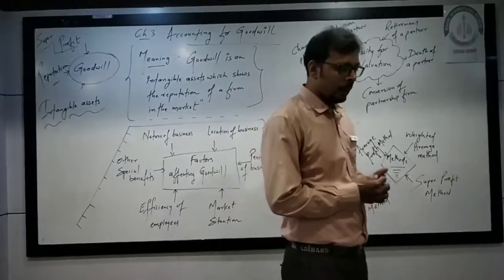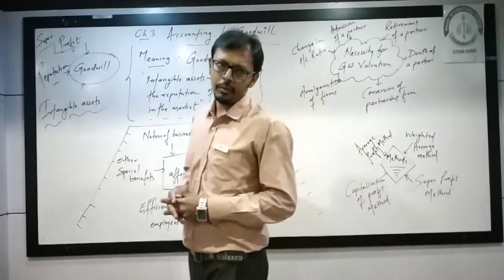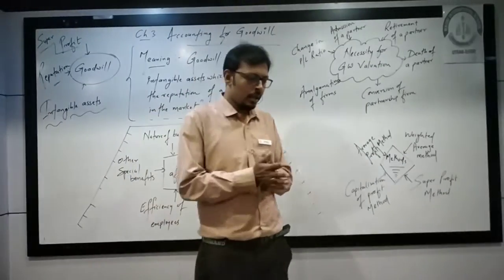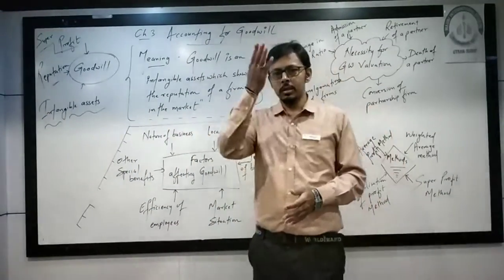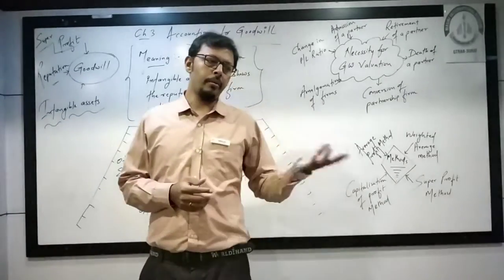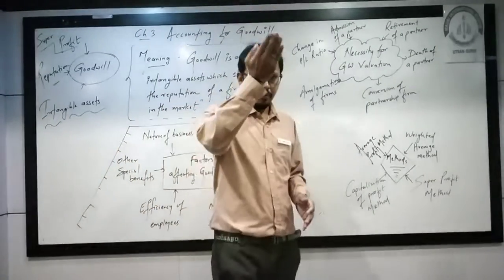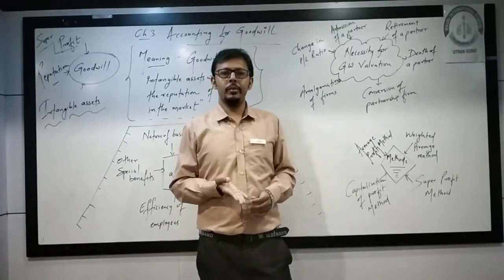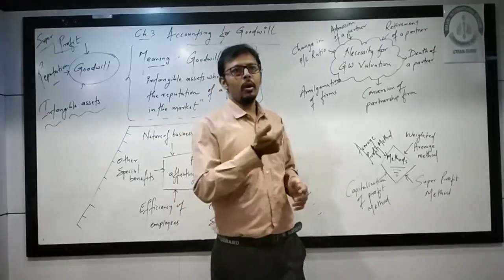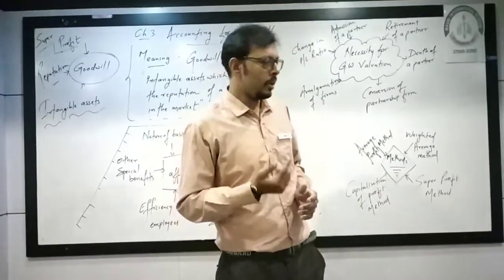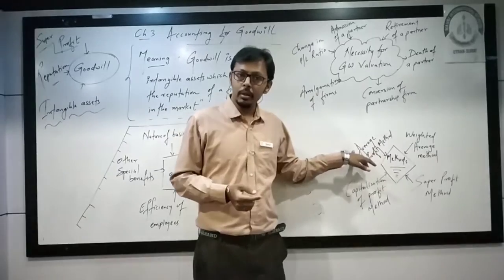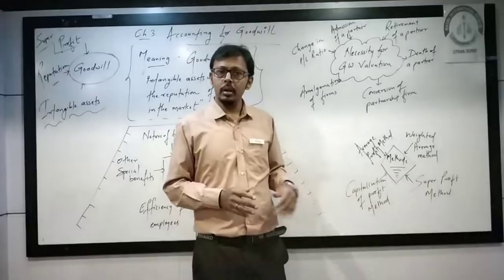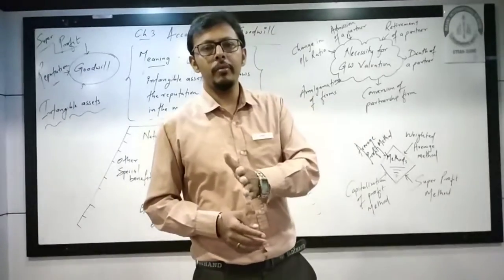Now, the methods with which we can find the amount of goodwill. Number one: Average Profit Method. In this method, years and profits are given — profits and losses might both be given. You add up all the profits (and subtract losses) to find total profit, then divide by the total number of years to get the average profit. Then: Goodwill = Average Profit × Number of Years of Purchase.